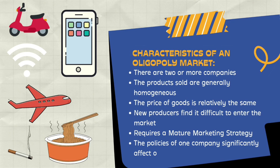Apart from the examples mentioned, there are still many examples of oligopoly markets around us that we don't realize. An important distinction: a market is called a monopoly market if it is controlled by only one company. While a market is called an oligopoly market if there are only two or a few companies that dominate the market.